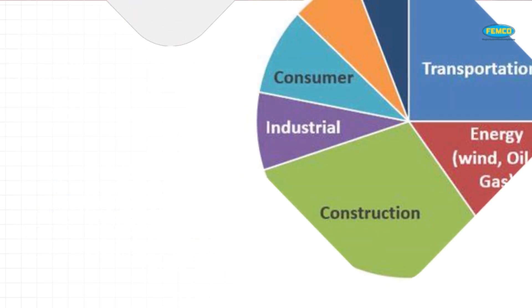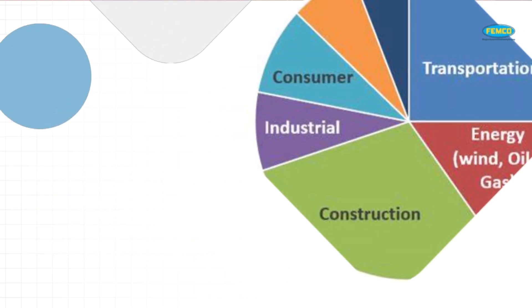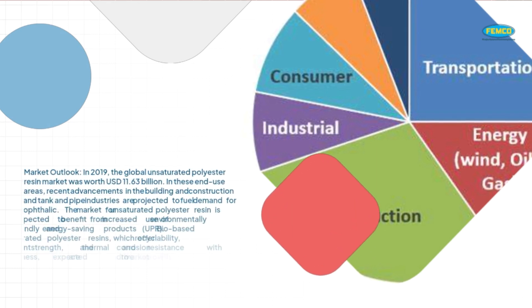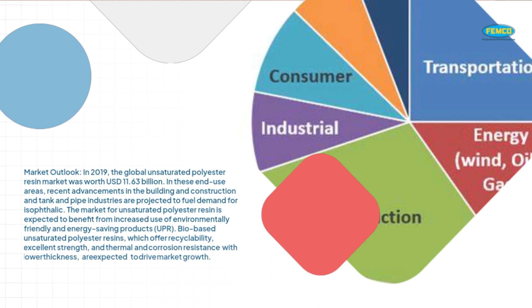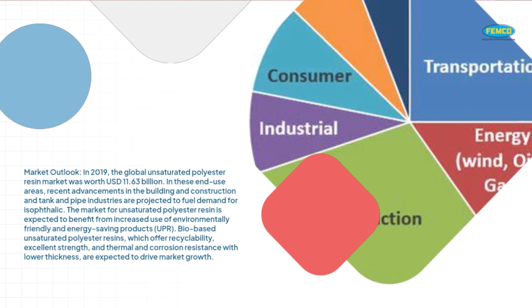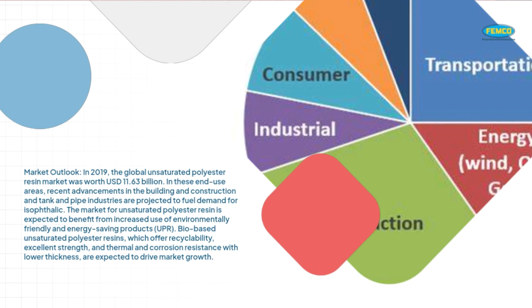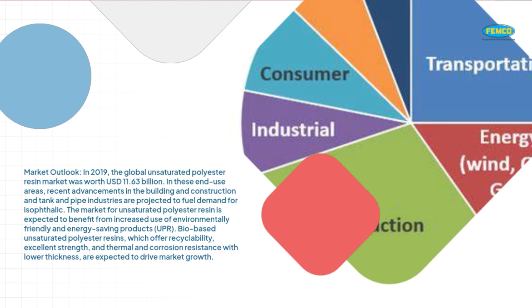In the market outlook for 2019, the global unsaturated polyester resin market was worth US$11.63 billion. Recent advancements in the building and construction and tank and pipe industries are projected to fuel demand for isophthalic resins. The market is expected to benefit from increased use of environmentally friendly and energy-saving products.